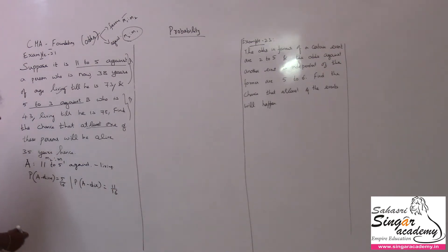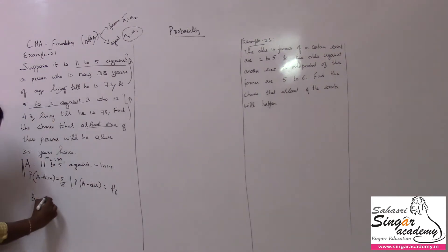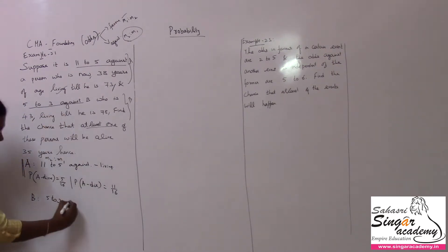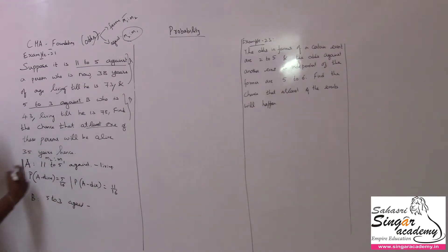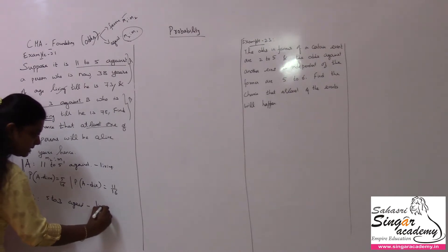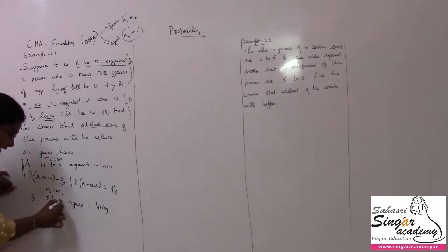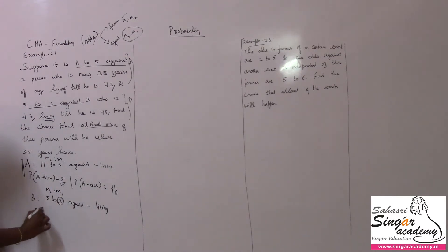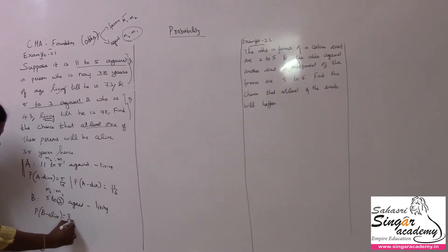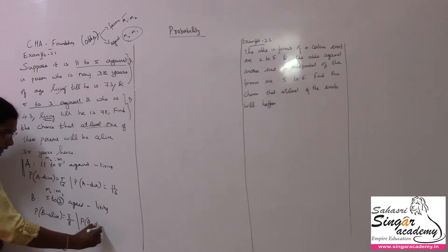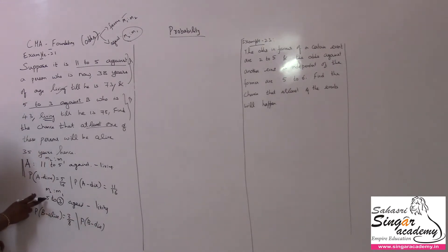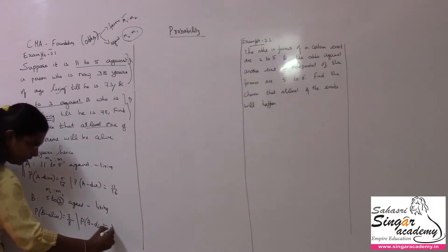With respect to B, it is given 5 to 3 against living. Against living means M2 to M1, so the favorable count for living is 3, total is 8. Therefore P(B alive) = 3 by 8, and P(B not alive) — B dies in these 35 years — is 5 by 8.